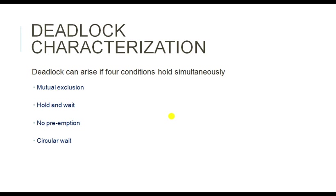Mutual exclusion means: suppose a resource is allocated to a process, and after the first process completes its work on the resource, no other process can enter or get access to that resource. If one process is using a resource, any other process requesting that resource must wait until the first process completes. This is called mutual exclusion.